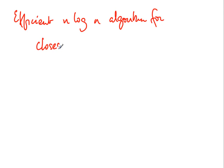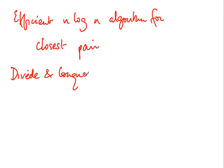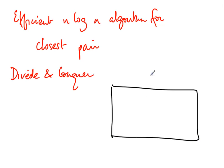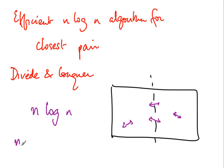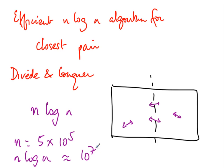There is an efficient n log n algorithm for this closest pair problem. It uses a technique called divide and conquer: divide the screen into two halves, find the shortest distance on each side, then combine the answers, cleverly handling distances that cross the boundary. For n = 5 × 10⁵, n log n is approximately 10⁷ — well under 10¹⁰, so it runs in under one millisecond. As a user of this video game, one millisecond is certainly less than your reflex time, so you would not notice any delay.